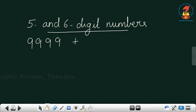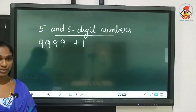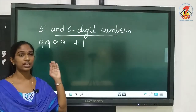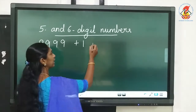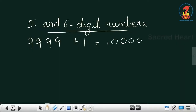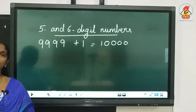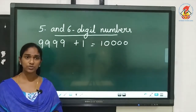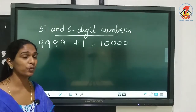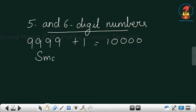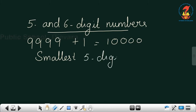Now, if I add 1 to 9999, what is the number that I am going to get? Yes, we will be getting 10,000. So 9999 plus 1 gives you 10,000. This is how many digits? Yes, it is a 5 digit number. So we can say the smallest 5 digit number is 10,000.